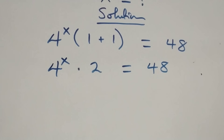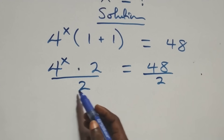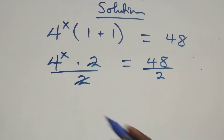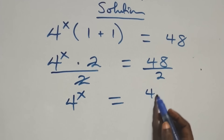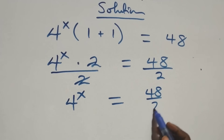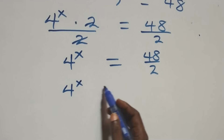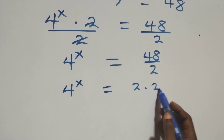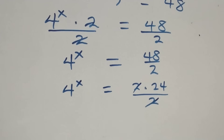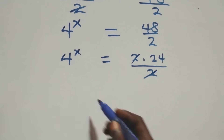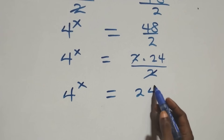The next step here: divide both sides by 2. The two cancels and we have 4 raised to power x equals to 48 over 2. We can write this as 4 raised to power x equals to 2 times 24 over 2, which implies the two cancels and we have 4 raised to power x equals to 24.